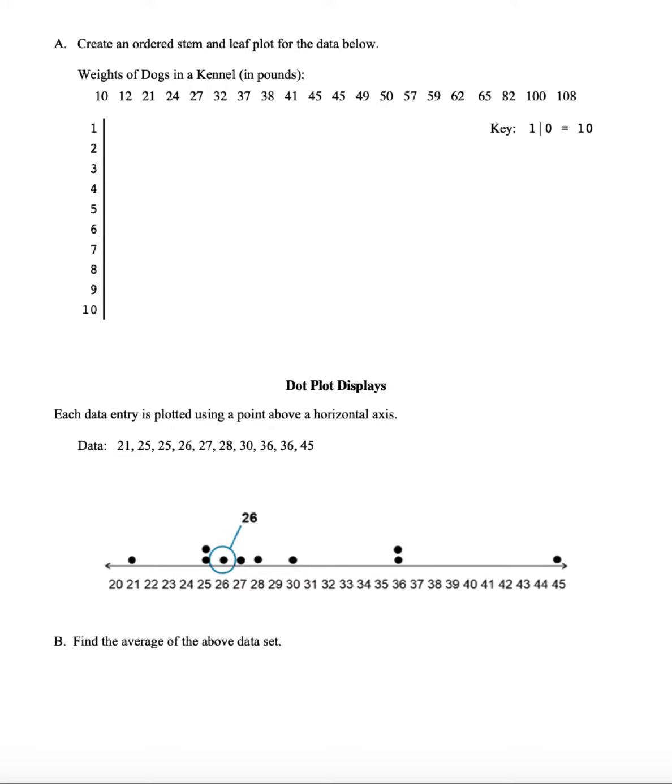Here I'm going to create an ordered stem and leaf plot for some data. The data is weights of dogs in a kennel in pounds. Now when we create a stem and leaf plot, we want to let the largest place values here be represented by what's called the stem.